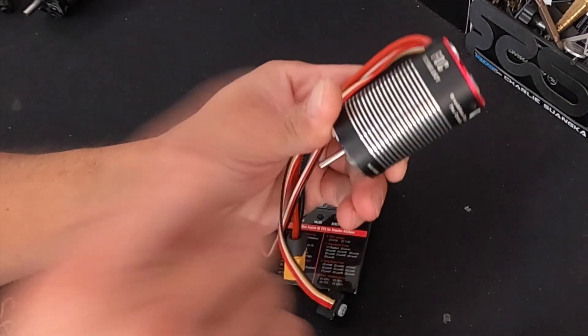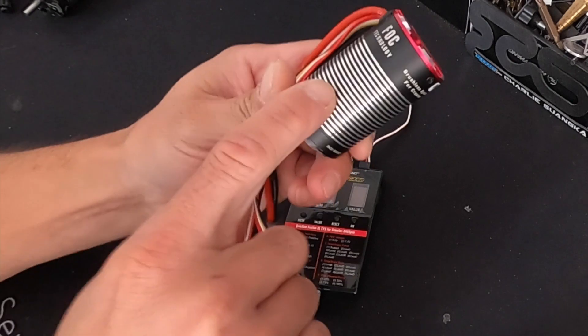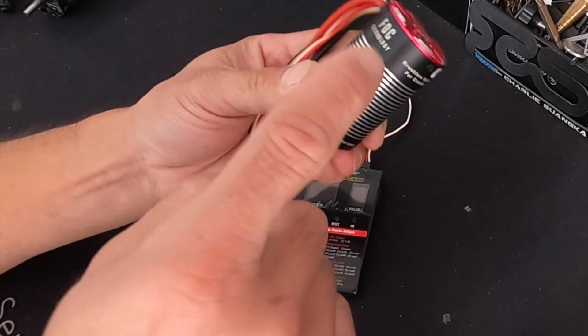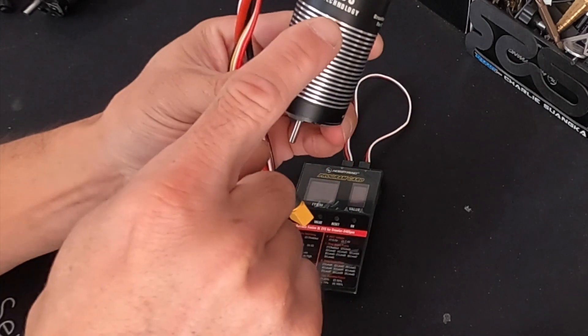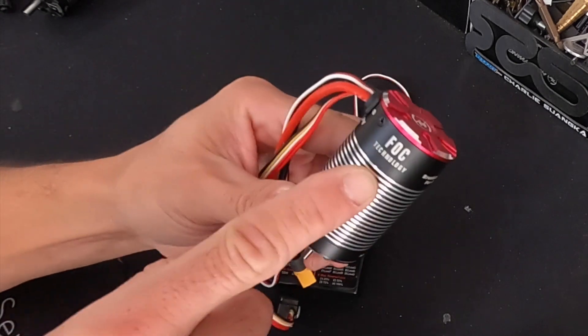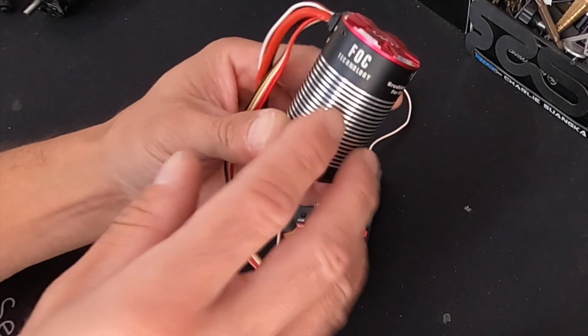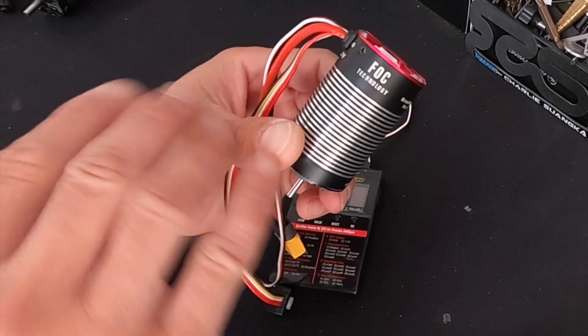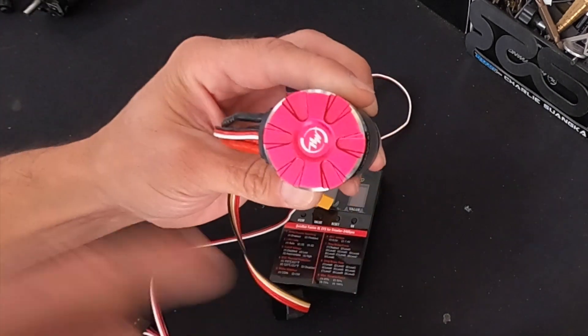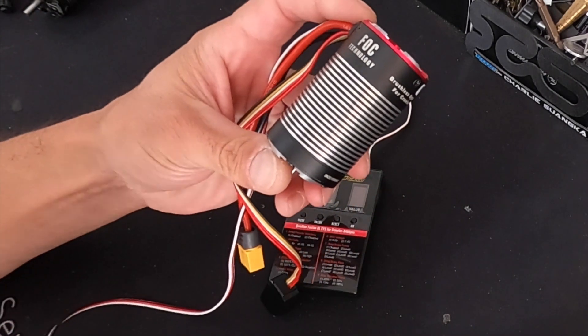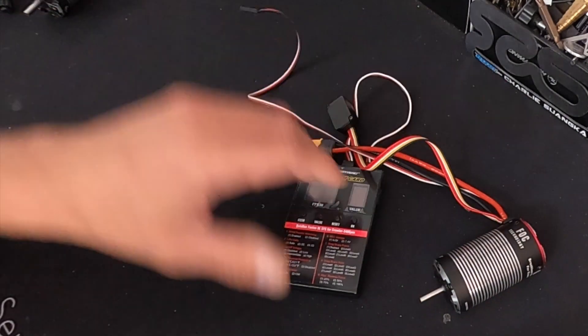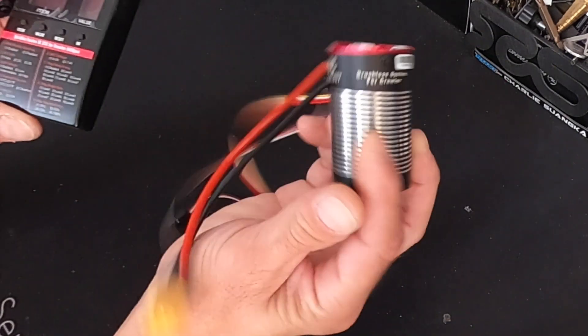In case you didn't know, this is an FOC, sensored brushless system. There's a motor, speed control's in the end, and it's FOC tech instead of your normal, what would be a sensorless or a standard sensor system. If you don't know what FOC is, we have other videos on that. But it's basically a closed loop sensor system that works extremely well for rock crawlers. And this is a new setup that is out now.